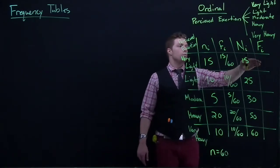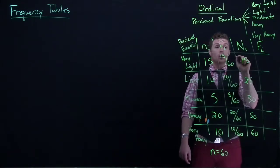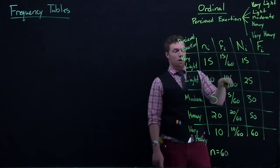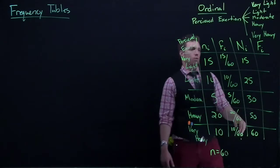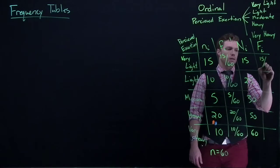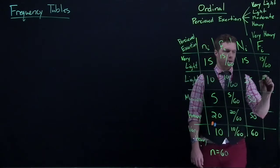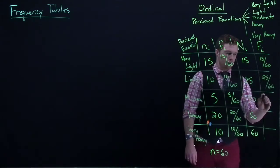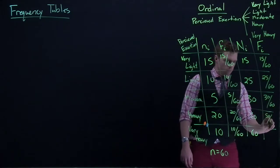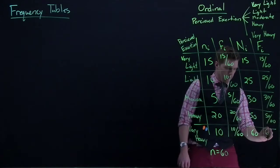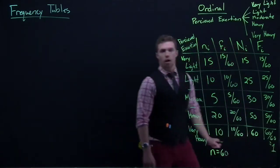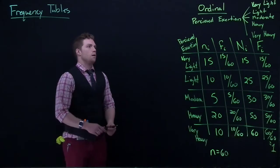All right, so from there we can do our cumulative relative frequency, which is just the cumulative frequency divided by the sample size. Or it can be the sum of the frequencies. Either one will give you the same number. So we're going to do 15 divided by 60, 25 divided by 60, 30 divided by 60, 50 divided by 60, and 60 divided by 60, which equals 1 or 100%.